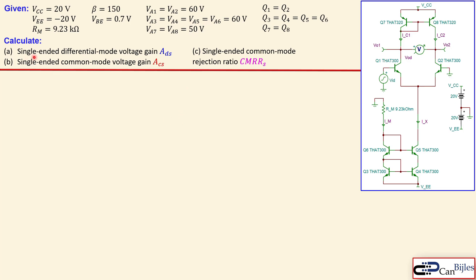In this case we would like to calculate the single-ended differential mode voltage gain and also the single-ended common mode voltage gain and then use these two values for the question C for the single-ended common mode rejection ratio.